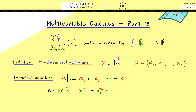This is a normal real number to the power of a natural number or zero, so it is well defined. Then we multiply by x2 to the power alpha2, and the product continues until the last component xn. So the multi-index notation describes a polynomial in several variables. We also need the factorial for a multi-index, which is defined using the factorials of the components: alpha1 factorial times alpha2 factorial, and so on — again simply a product of natural numbers.